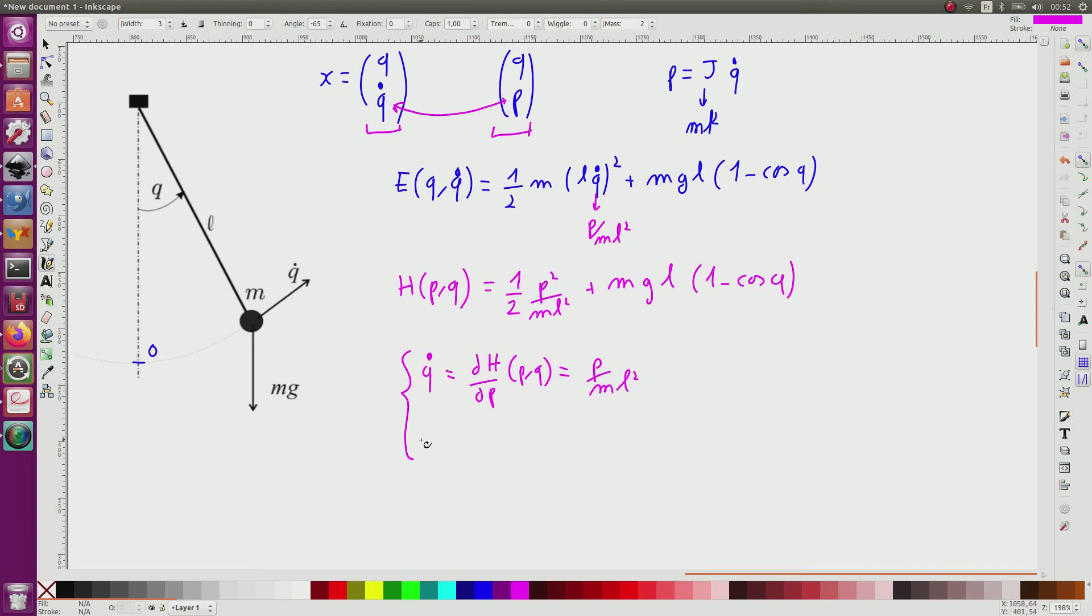And now I have also p dot equal minus the derivative of the Hamiltonian with respect to q of (p, q), which is equal to minus mgl sin of q. This is my state equation, so if now my state vector is q and p, I get something of the form x dot equal f of x.